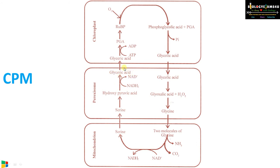Serine is transported back to the peroxisome where it forms hydroxypyruvic acid, then converted to glyceric acid. Finally, glyceric acid enters the chloroplast where, with the use of ATP, it becomes phosphoglyceric acid and enters the Calvin cycle. During this pathway, ATP and NADH are utilized, and ammonia and carbon dioxide are released. This release of carbon dioxide reduces carbon dioxide fixation, thereby reducing the overall photosynthetic efficiency of plants.